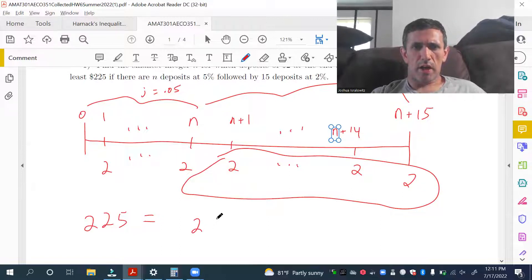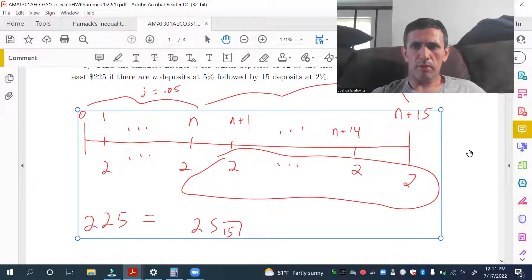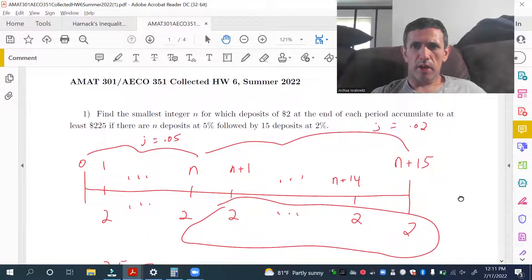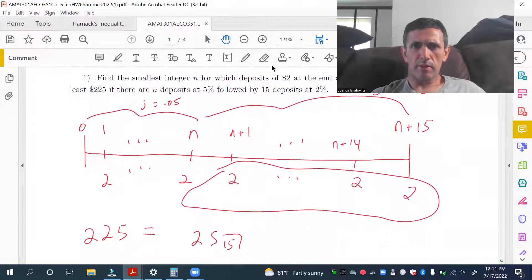So, payment periods for the last ones here start at N and the first payment is at the end of the, this would be the N plus 1 period. So, it begins at N, just like the first period begins at zero. So, we have these 15 payments. So, this is very simple. It's 2S15. So, the interest rate here is 2%. So, 0.02.